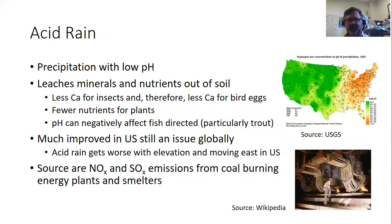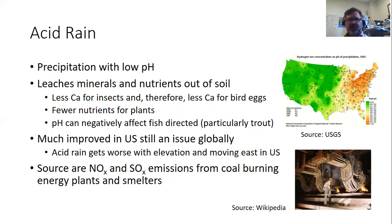Acid rain is defined as precipitation with low pH. When it rains on areas, it can leach minerals and nutrients out of the soil. For example, there is less calcium available for insects, and birds rely on calcium in their eggs from eating insects. If there's less calcium in insects, there's less calcium for eggs, so we see eggshell thinning as a result of acid rain. There are also fewer nutrients for plants, and in places where acid rain is a problem, it can actually kill plants.